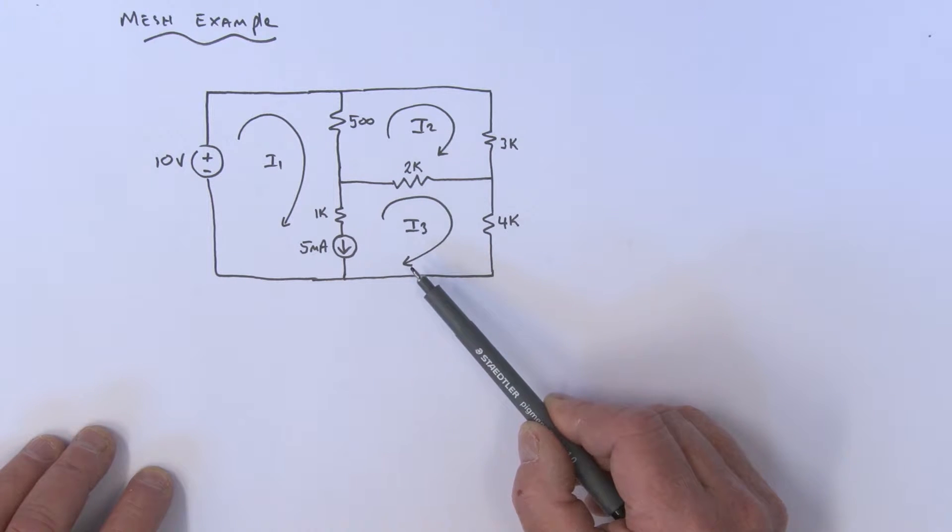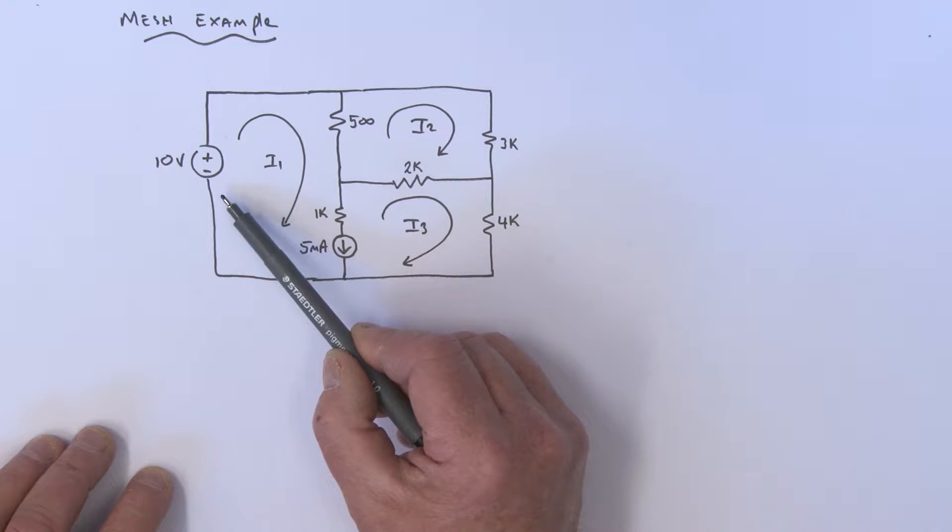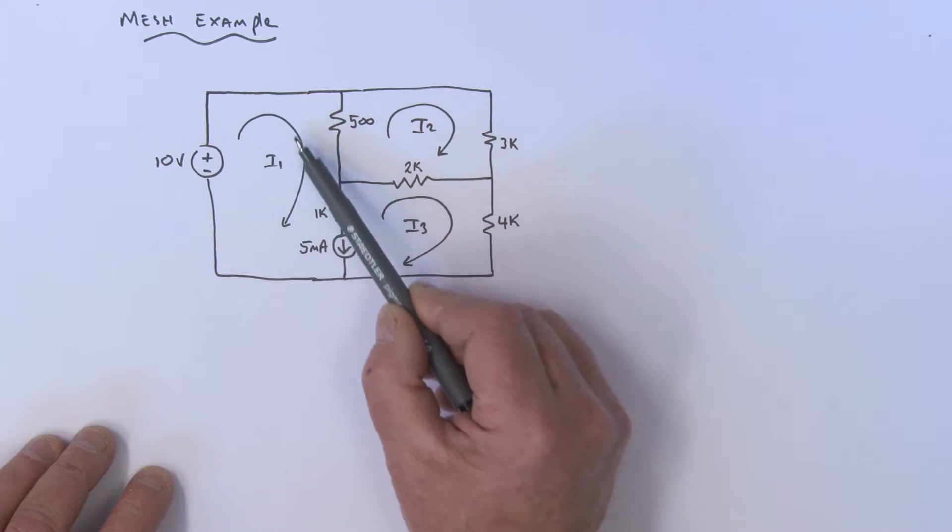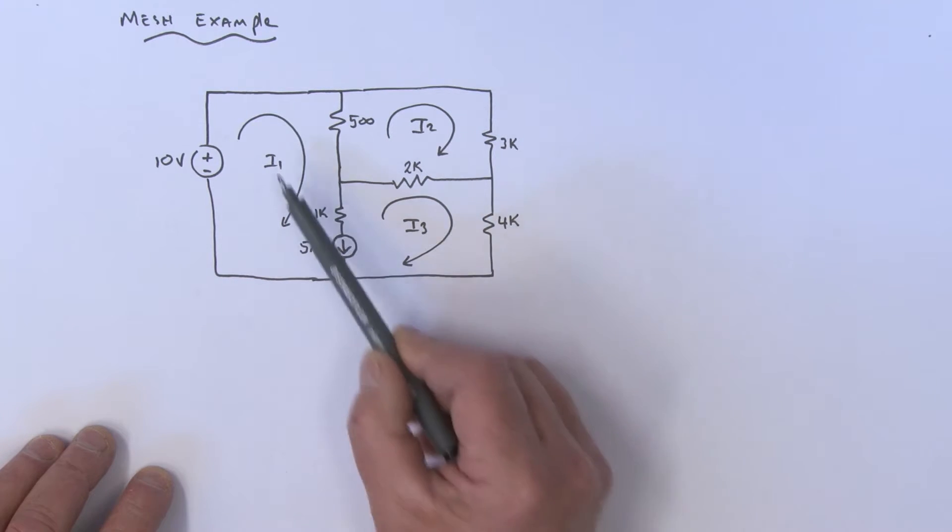We're going to start with the I1 mesh and work in this direction, taking a loop that incorporates the I1 and I3 mesh currents. Let's start right here.